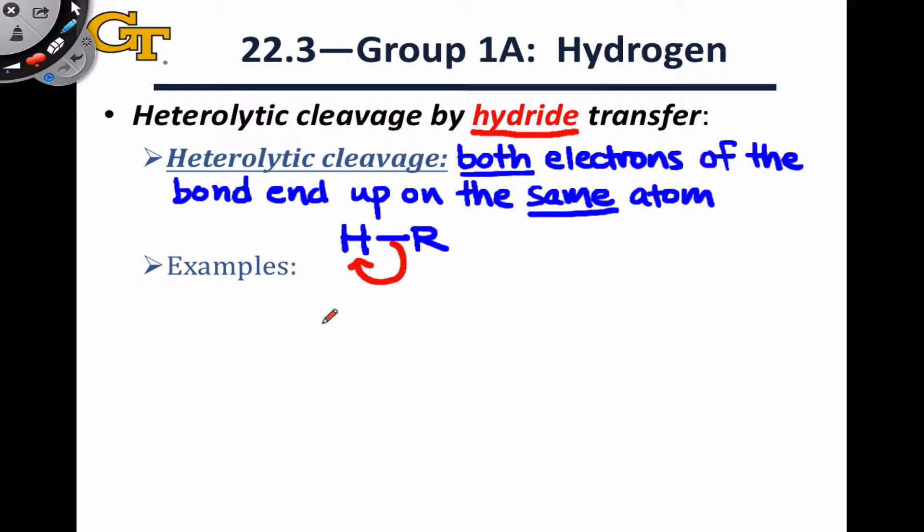All of these examples of heterolytic cleavage by hydride transfer involve the flow of electrons toward the hydrogen and donation of a pair of electrons from the hydrogen atom to some other fragment. For an example, consider sodium hydride reacting with borane, BH3. In this reaction, we've actually already implicitly done the heterolytic cleavage in that we've given both electrons in the sodium-hydrogen bond to hydrogen to form a hydride. We did this because it's better to think of sodium hydride as an ionic compound rather than a covalent compound.